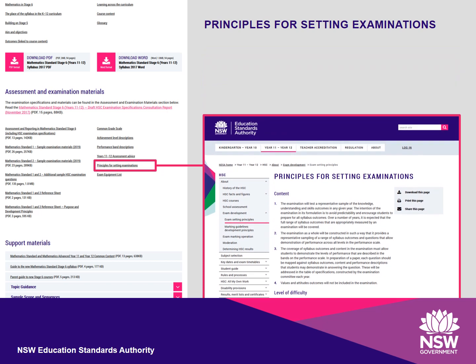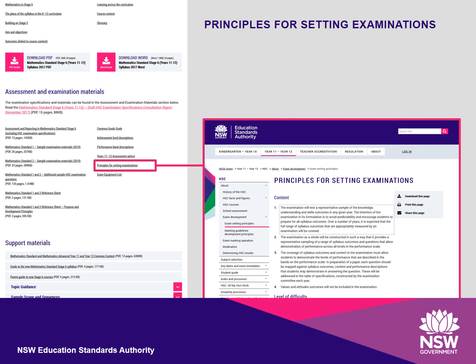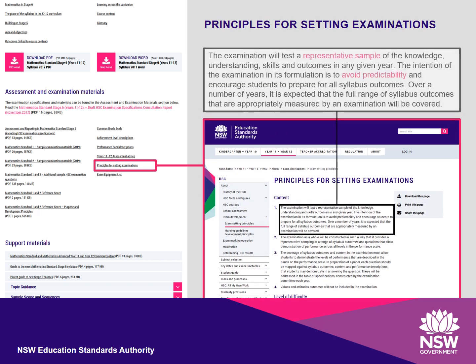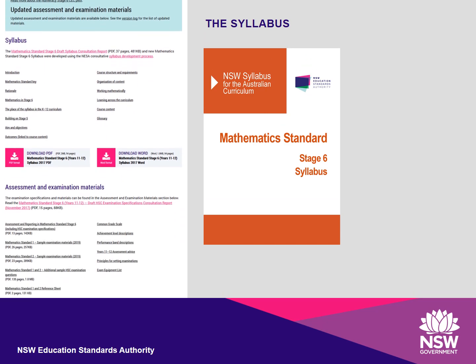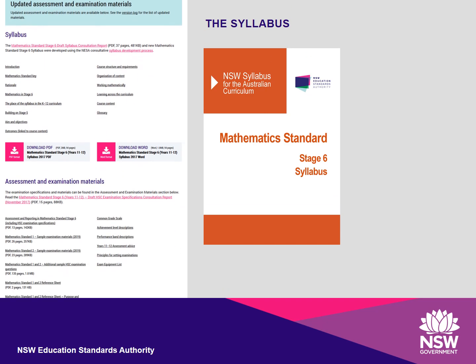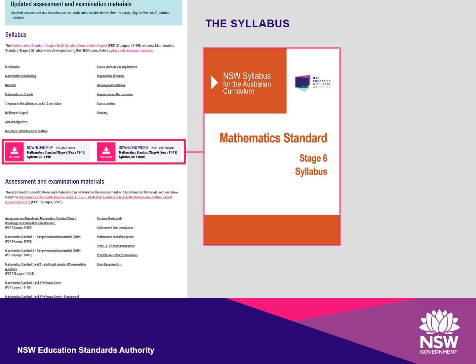For example, this principle states that an exam will test a representative sample of the syllabus. This approach minimises the predictability of questions. Only syllabus content and outcomes can be examined. Textbooks and teaching resources are not examinable.